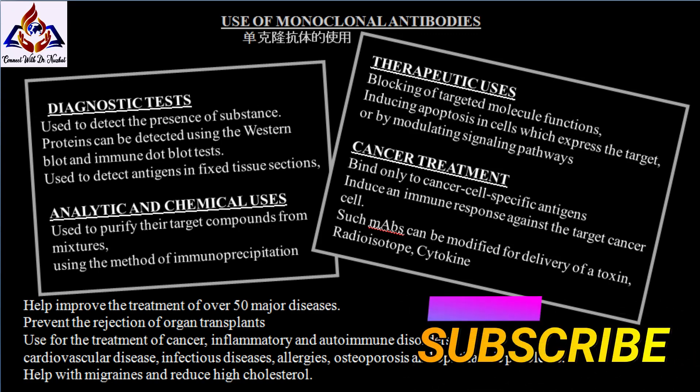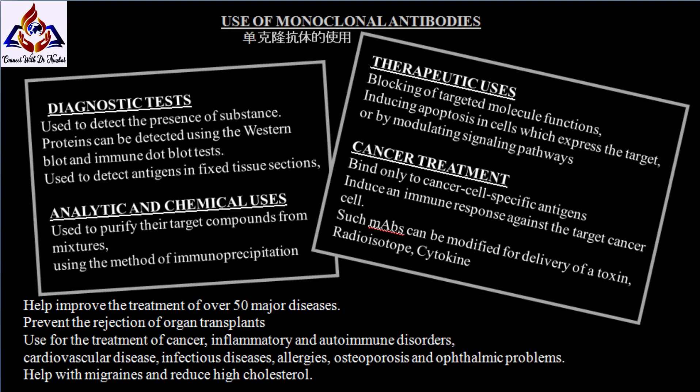Bi-specific antibodies can bind both to a target antigen and to a conjugate or effector cell. Every intact antibody can also bind to cell receptors or other proteins with its Fc region. Monoclonal antibodies have helped improve the treatment of over 50 major diseases. They are used, for example, to prevent the rejection of organ transplants and for the treatment of cancer, inflammatory, and autoimmune disorders.